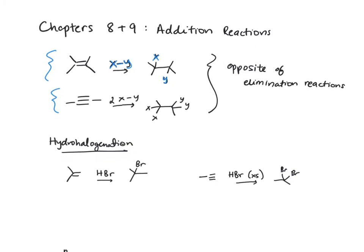The first reaction we'll discuss is hydrohalogenation. Here we have hydrobromic acid, or we could also use hydrochloric acid, to add across the pi bond and we see a Markovnikov addition where the bromine is on the more substituted carbon atom.